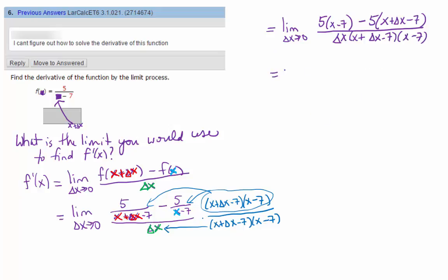Okay, now what? Yeah, so what is this going to be? This is going to be 5x minus 35 up here. This is going to be negative 5x minus 5 delta x plus 35.